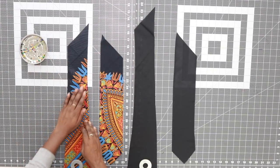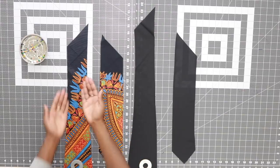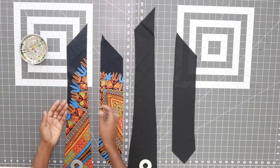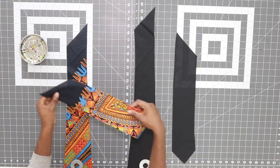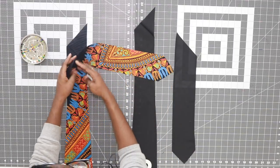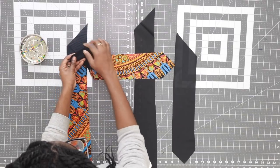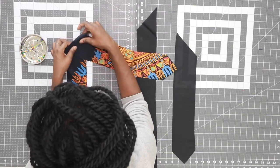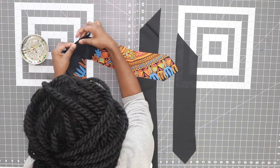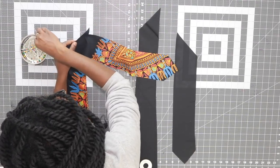What you want to go ahead and do is with the front side facing up, with the right side of the front facing up, take the back piece and now you have the right side touching the right side. You want to line up those notches and place a pin there.